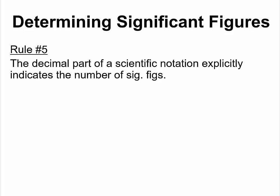This leads to a little problem. If you write a number like 3570 and ask a mathematician how many significant figures, the mathematician might say four significant figures — and the mathematician is not wrong. But in science, we consider this to be three significant figures, because the last zero is not followed by a decimal and does not follow a decimal, so it is not significant. So why should we have two different significant figures for the same number, and how do we prevent this problem?